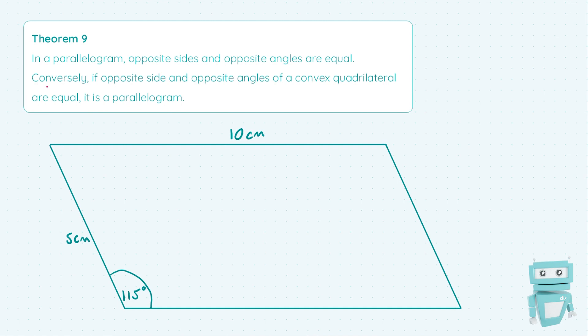The second sentence says 'conversely,' and conversely just means the same thing is true but in reverse — it deals with the reverse implication. In this case, the reverse is that if opposite sides and opposite angles of a convex quadrilateral are equal, then it is a parallelogram. So if you have a four-sided shape where opposite angles and opposite sides are equal, then the opposite sides are in fact parallel.